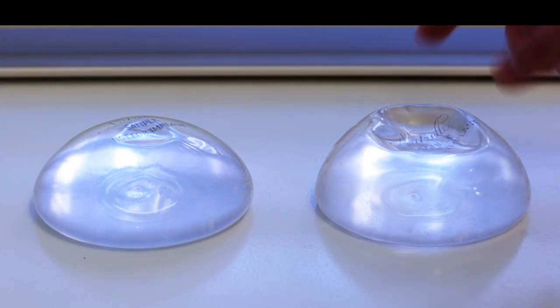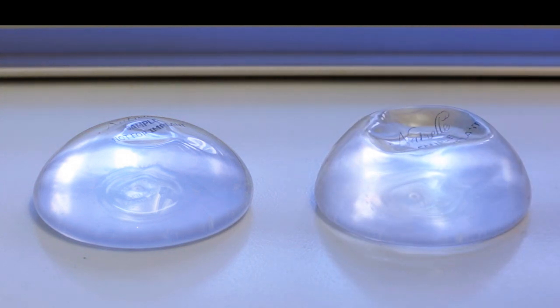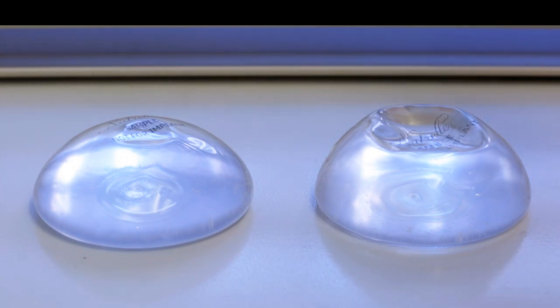You can see here that the shell of the regular implant kind of bows in itself on the top, and that's because the gel on the inside is a little bit softer. Both of these gel cores are solid, so they're both technically gummy bear implants.